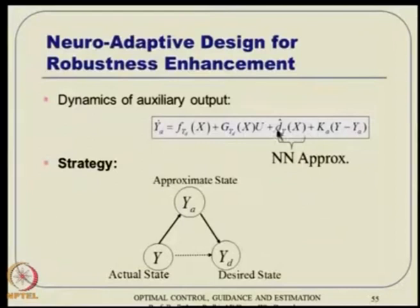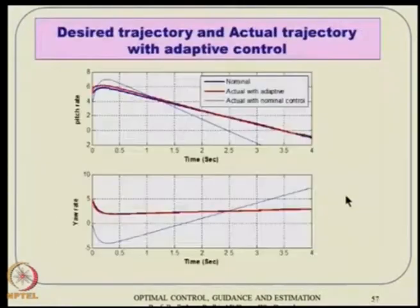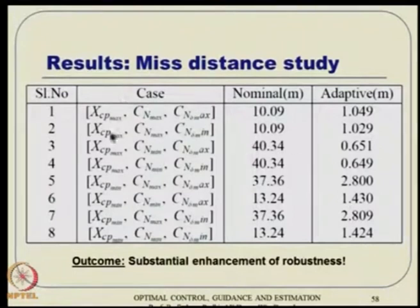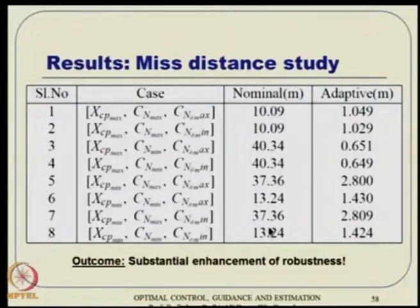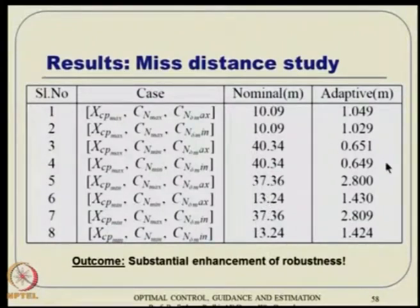The parameters that greatly affect vehicle dynamics are taken at nominal and minimum/maximum values. Without adaptation, if parameter inaccuracy is present, the miss distance grows to 30–40 meters, whereas the nominal design gives sub-meter accuracy. With adaptive control, miss distance comes back within 1–2 meters, maximum 2.83 meters. You can see a substantial enhancement of robustness in the miss distance sense directly.